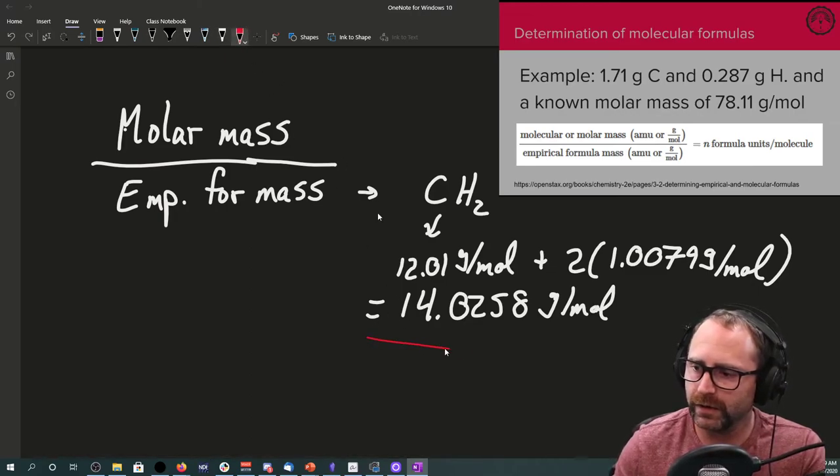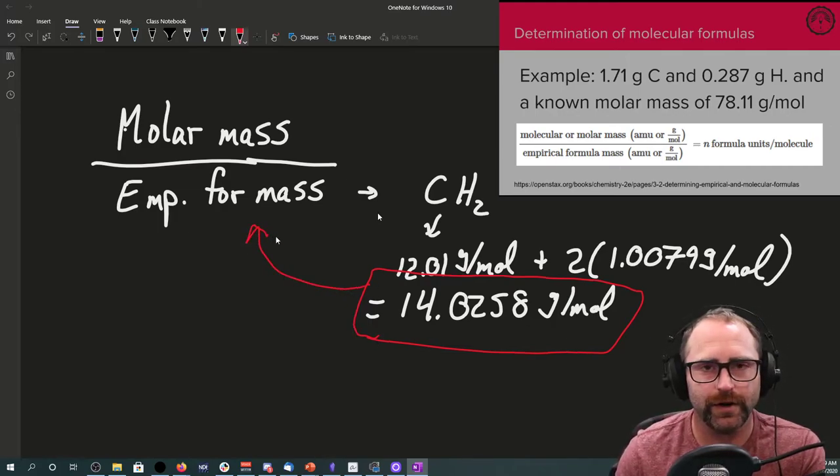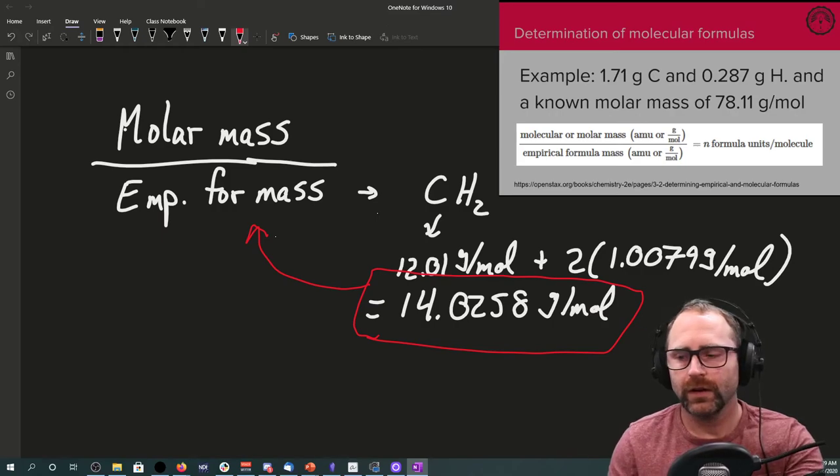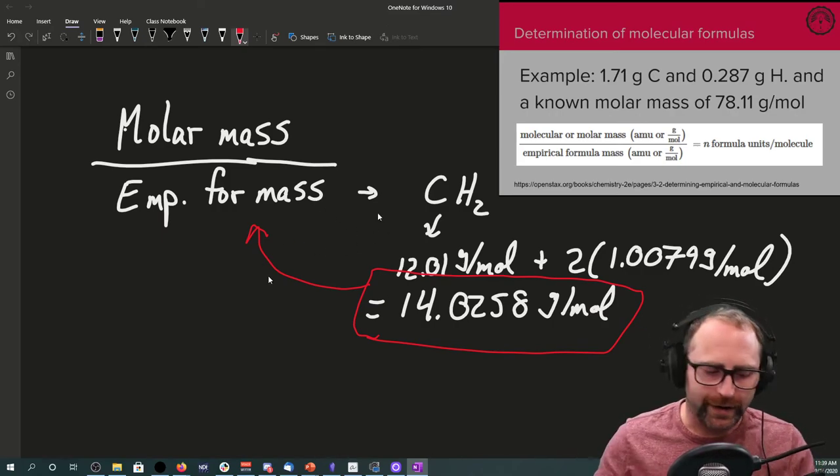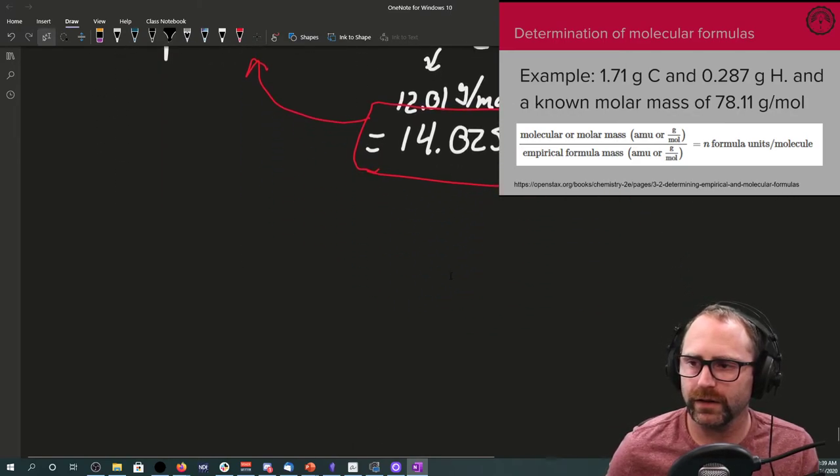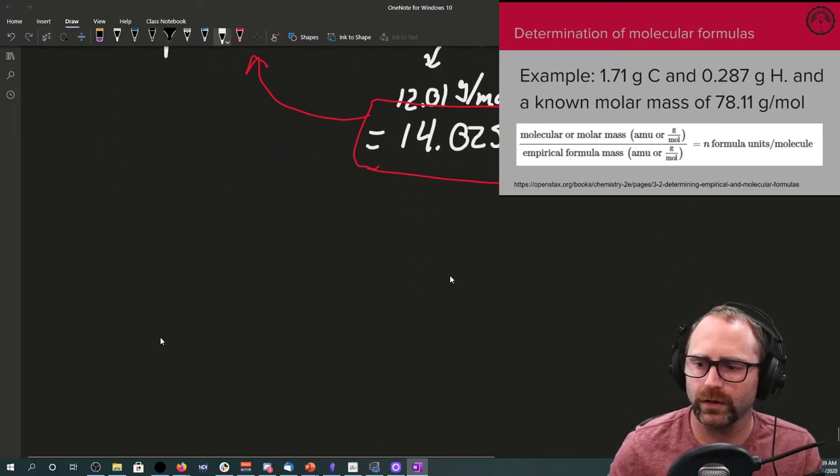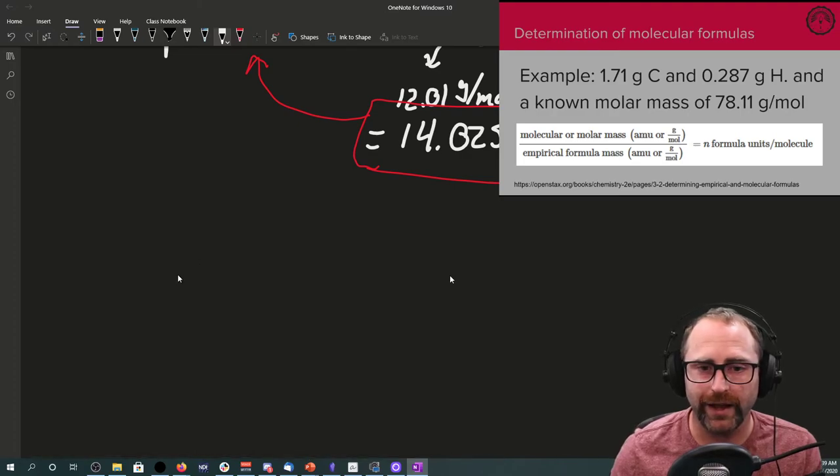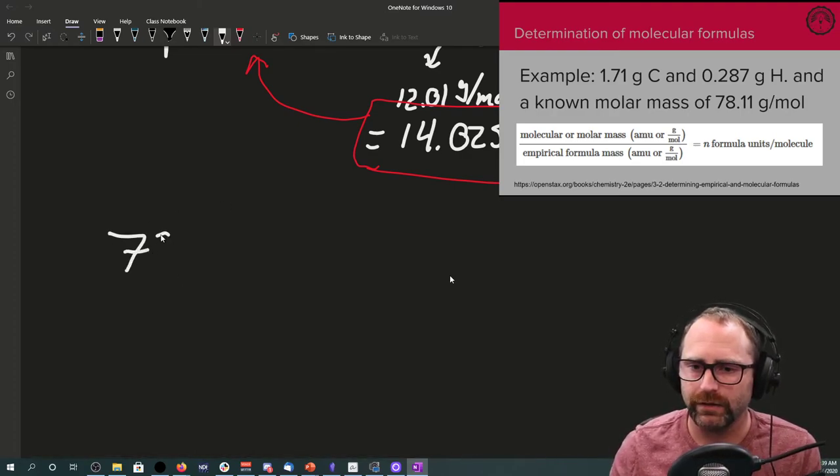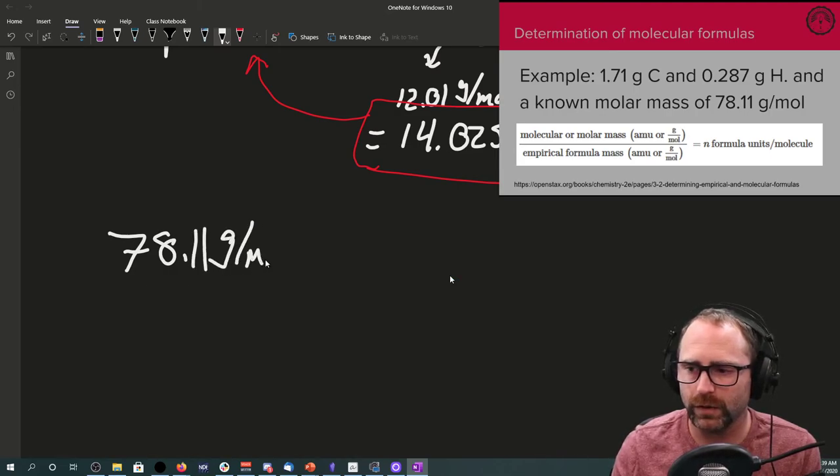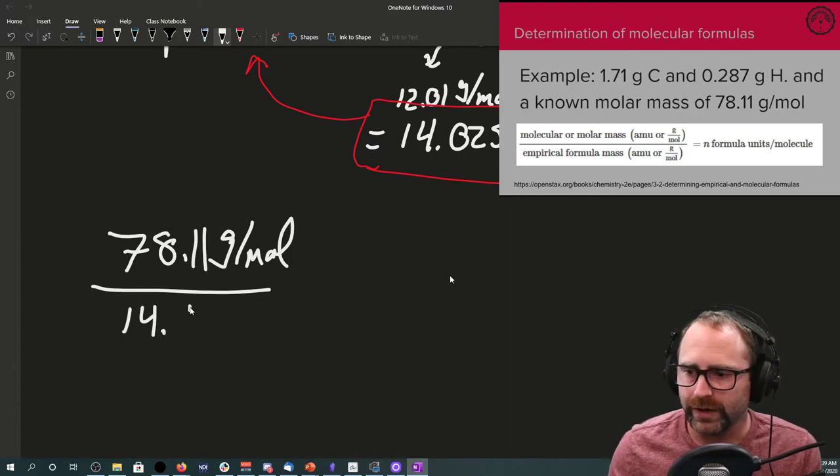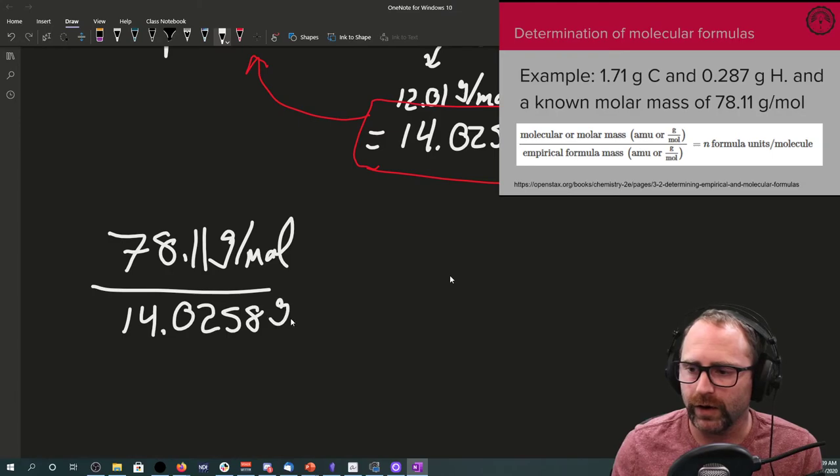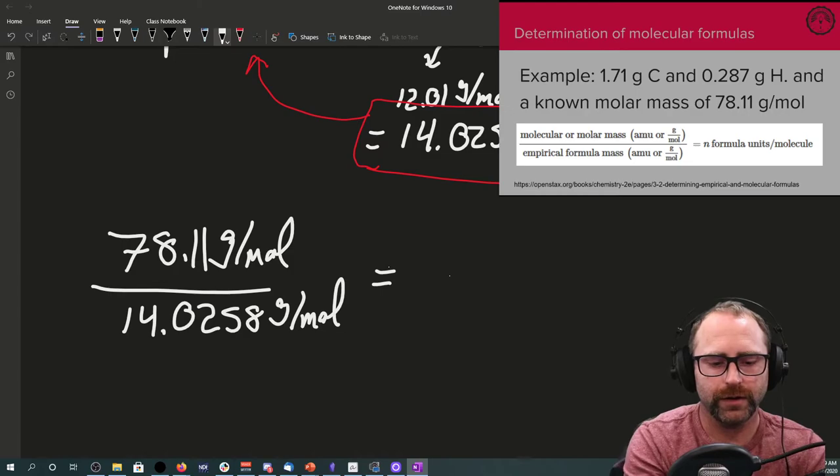That will end up equaling 12.01 plus 2 times 1.0079 and we get our 14.0258 grams per mole. So, this number goes into that part of the equation. So, writing it out, we get the molar mass. And the problem gives us the molar mass. 78.11 grams per mole over 14.0258 grams per mole equals some number.